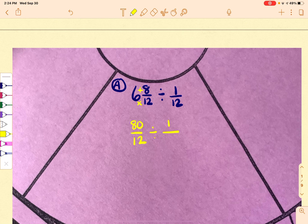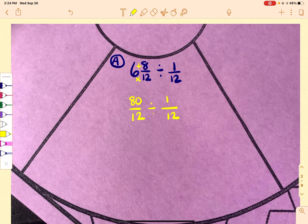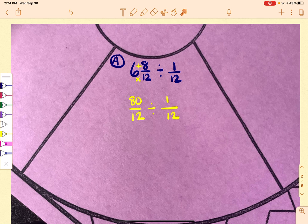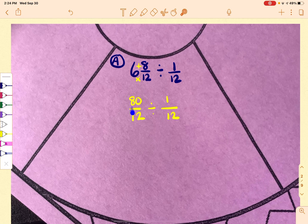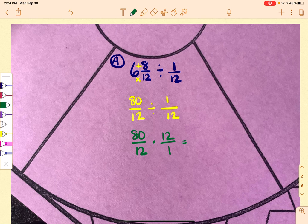The second fraction is completely okay. You do want to make sure it's set up in the appropriate way that both of these are fractions. Don't start doing your keep, change, flip until everything's in fraction form. So now that this is set up okay, I'm going to do keep, change, and flip. So now I just need to go and multiply across.